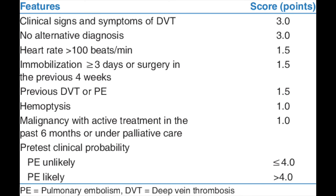Next is Wells criteria, which is applied for PE. If the score is 4 or more you do a CT angiography. If it's less than 4 you do a D-dimer.